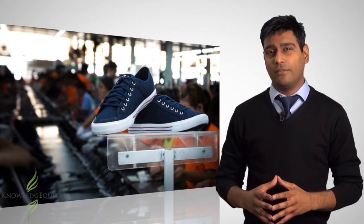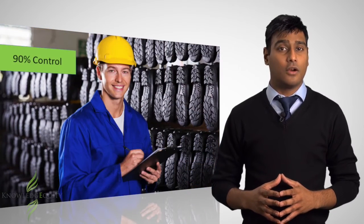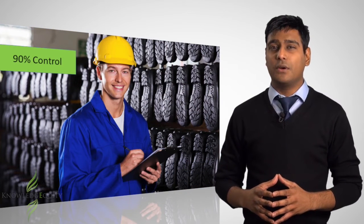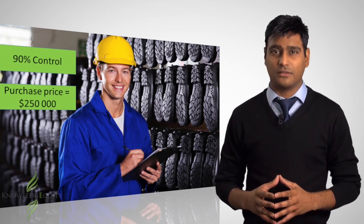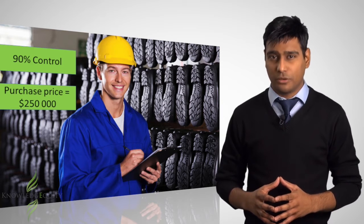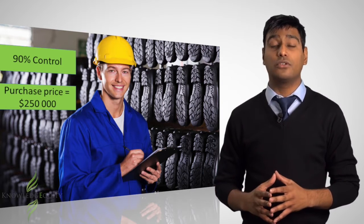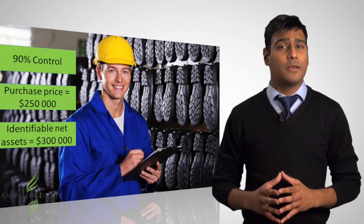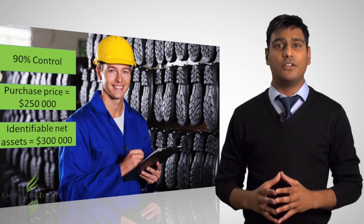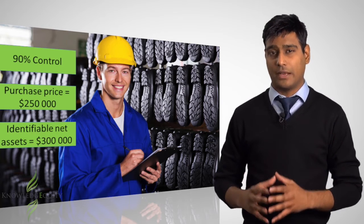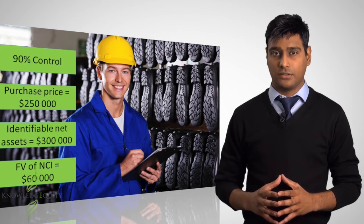For example, Alpha Limited is a major player in the shoe manufacturing industry. On 31st December, Alpha acquired a 90% share interest in Beta Limited for $250,000. Beta is a major competitor in the shoe industry, and this acquisition gives Alpha Limited control over Beta Limited. Beta Limited's net identifiable assets had a fair value of $300,000 on the acquisition date and the fair value of the non-controlling interest was $60,000.